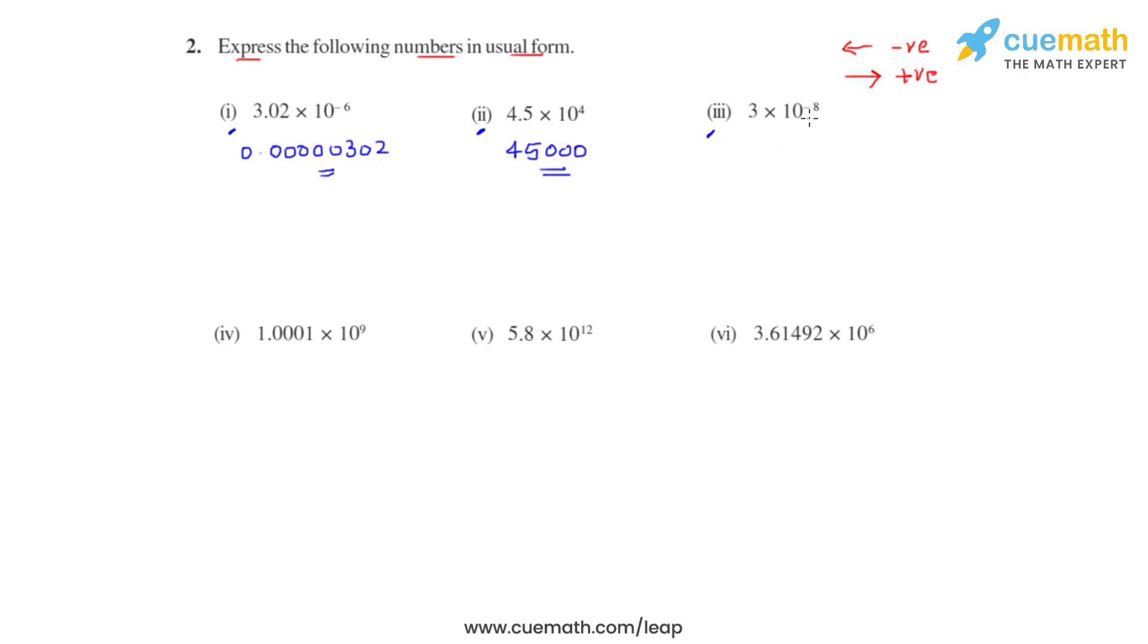Coming to the third bit, we have the power of 10 as negative 8, so the decimal which is after 3 must move 8 places towards left. So we get 0.0000003.